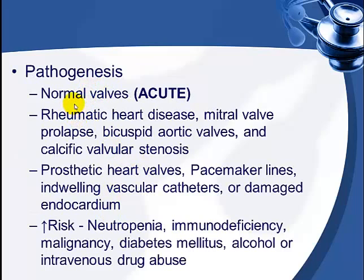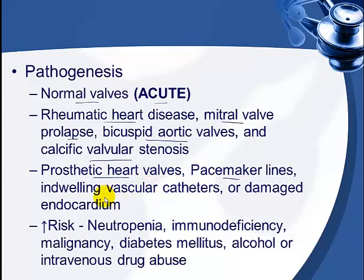Abnormal walls that predispose to endocarditis include those seen in rheumatic heart disease, mitral valve prolapse, congenital bicuspid valves, calcific valve stenosis, prosthetic heart valves, pacemaker lines, indwelling vascular catheters, or endocardium damaged by a jet stream of blood. Wherever such jet-stream damage occurs, it becomes a nice focus for bacterial seeding.